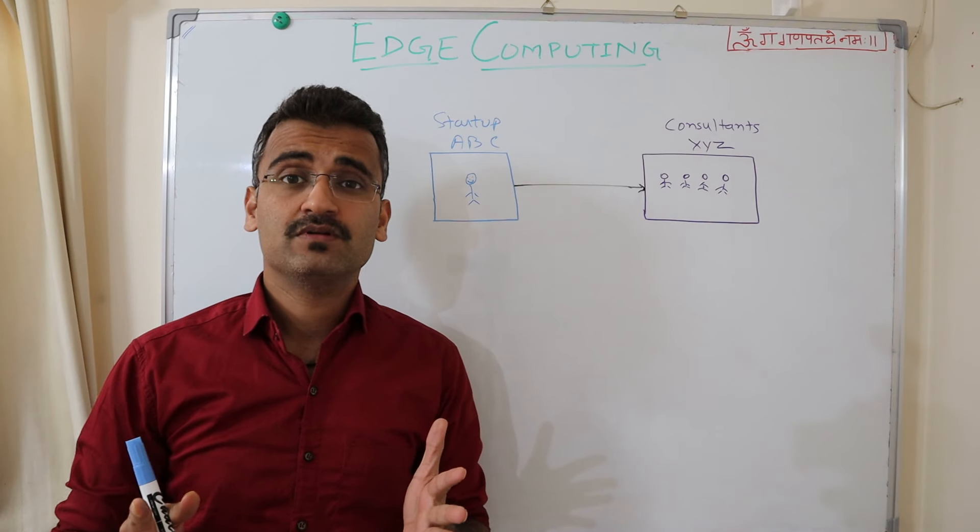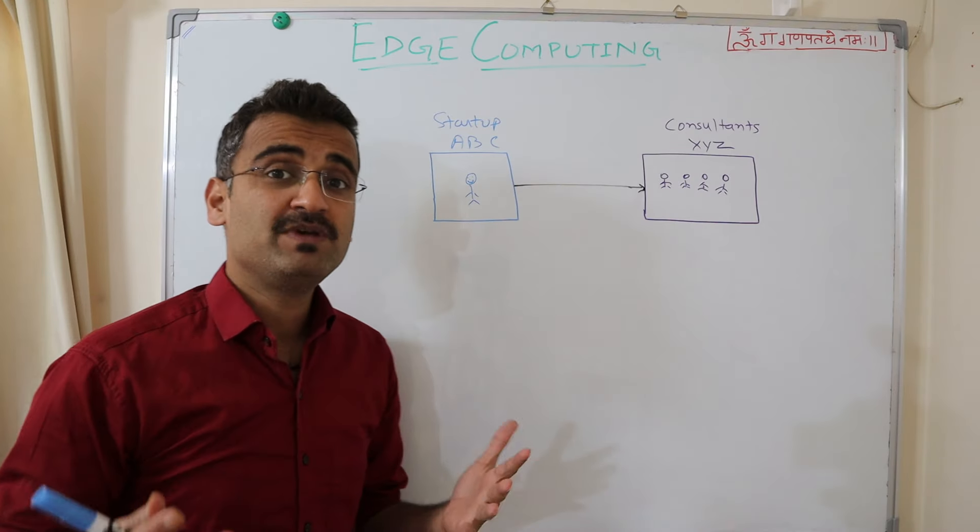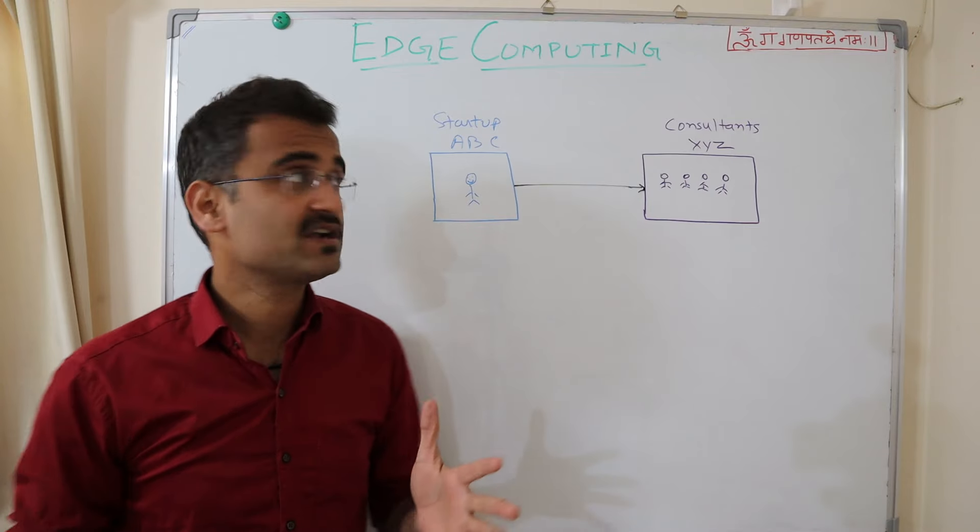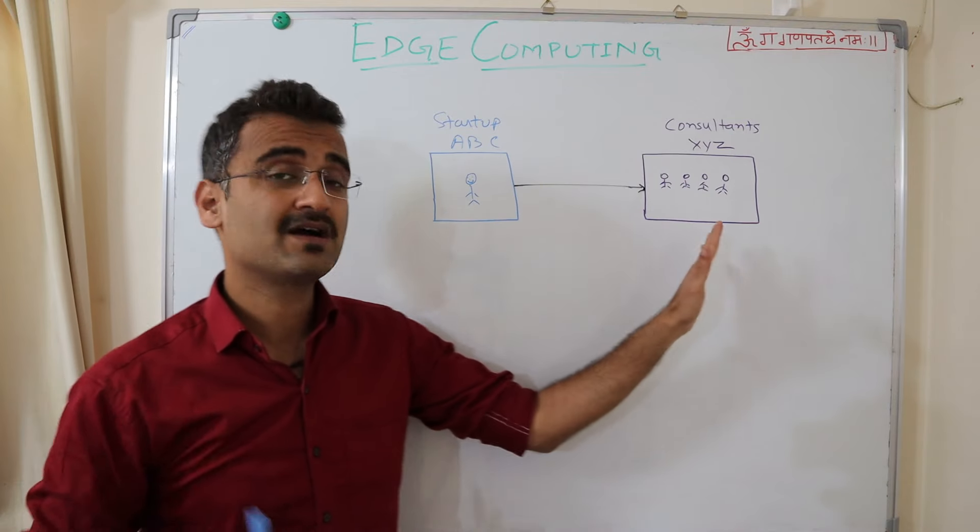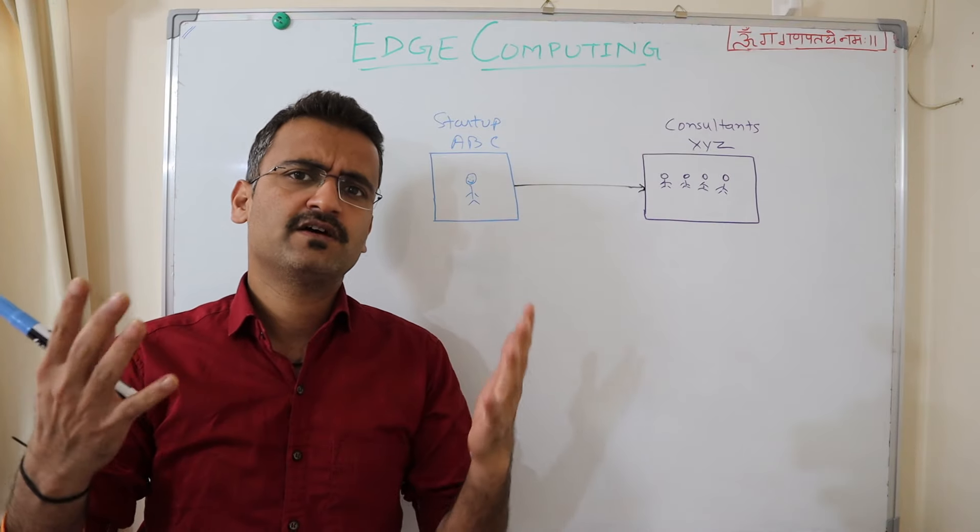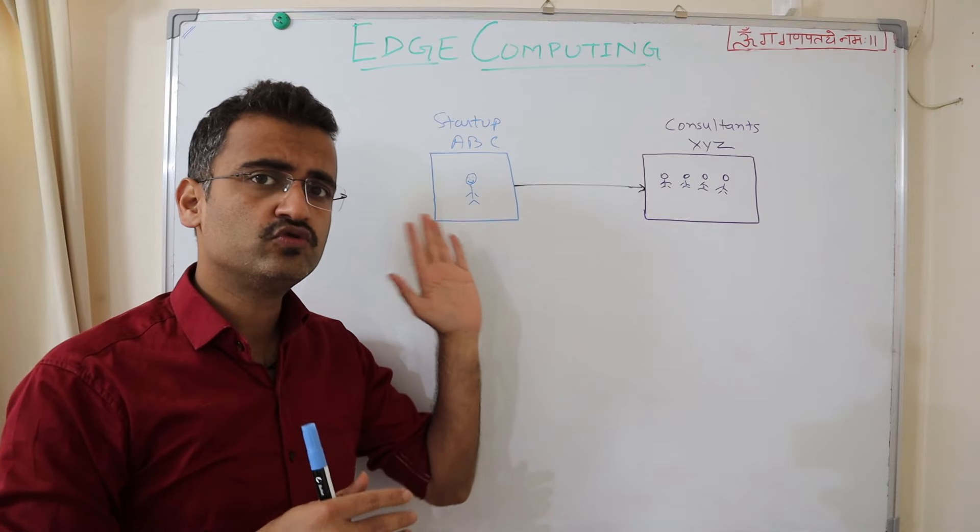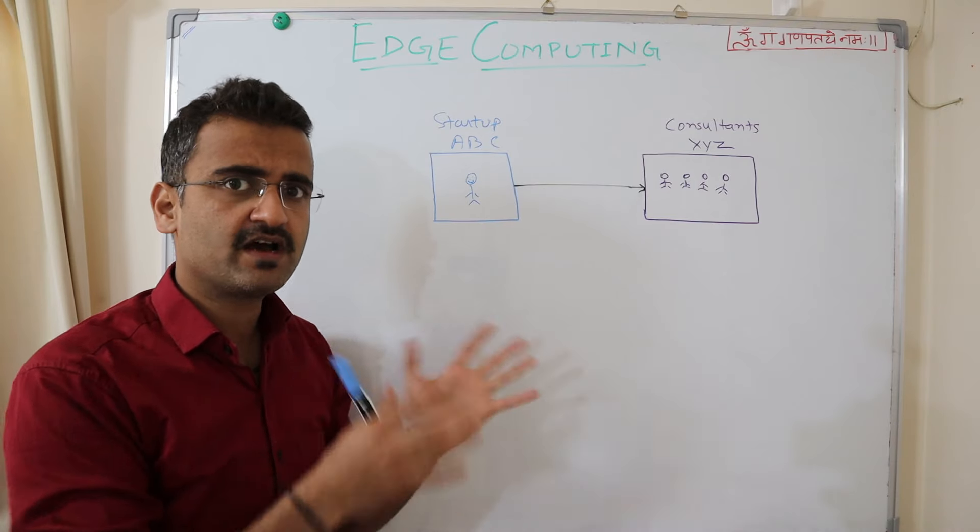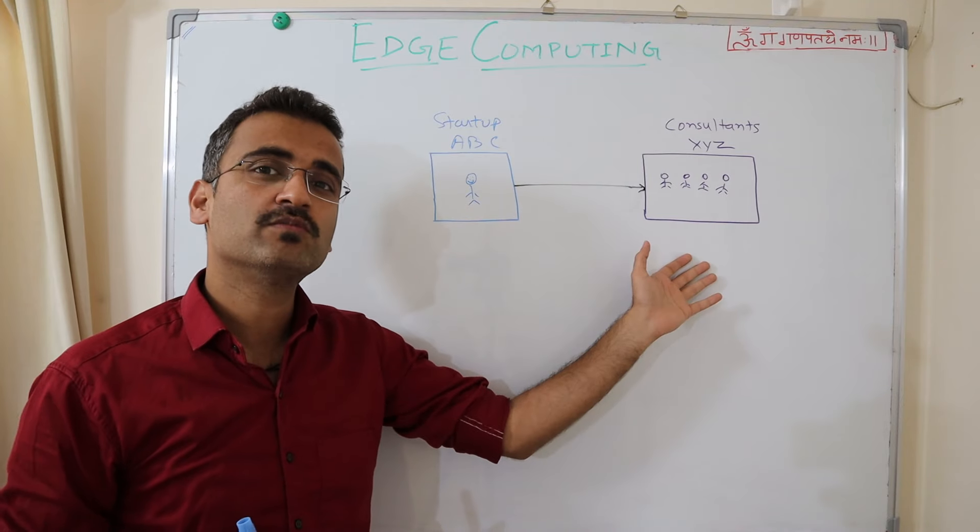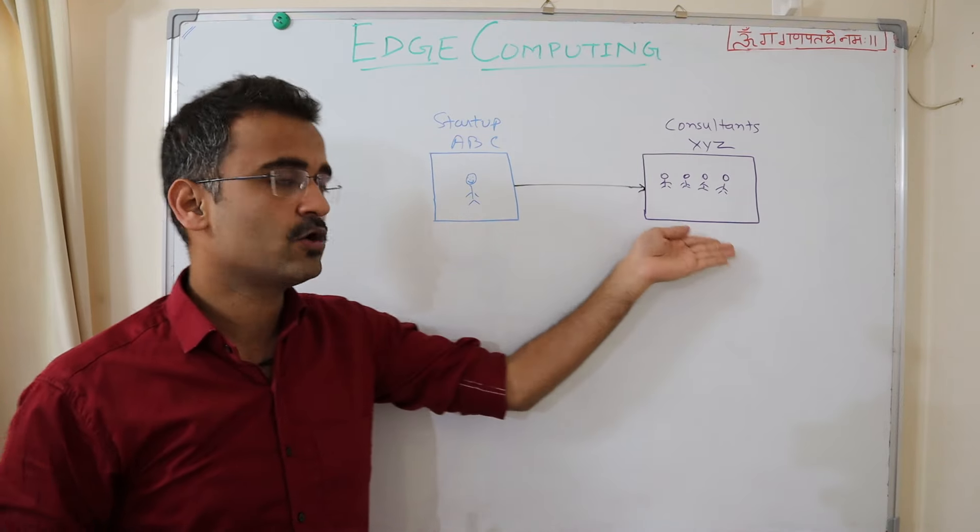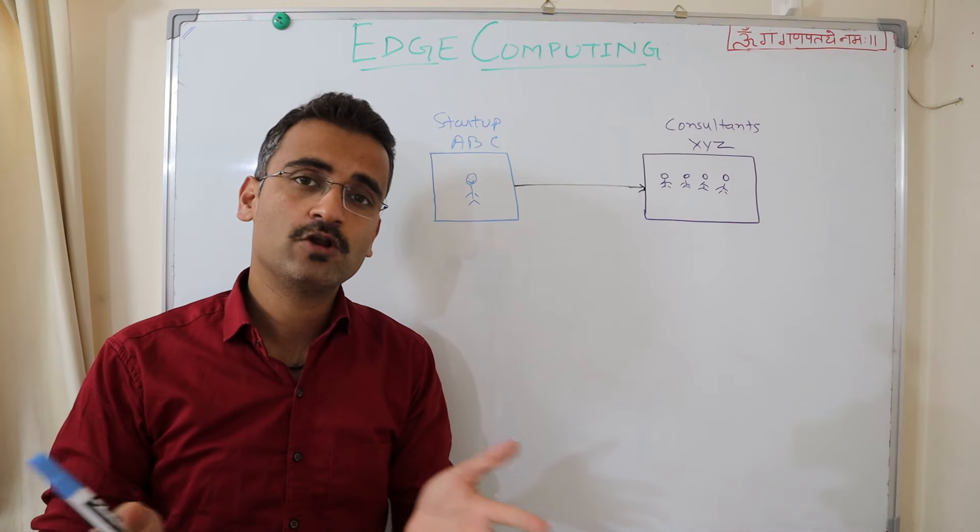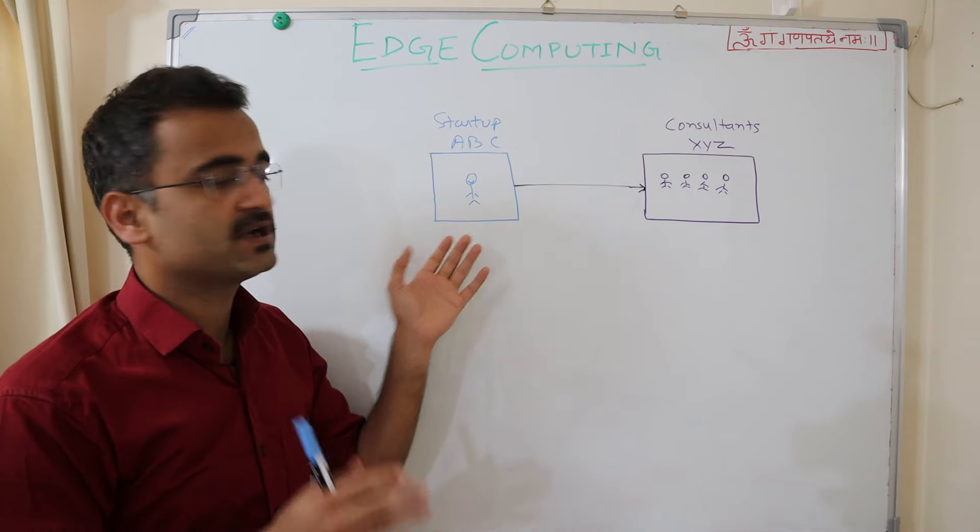So let's take an example. Suppose this is a new startup named ABC and this guy is the owner of this startup. Now to manage the financials of this particular startup, he contacts a consultancy and accountancy firm XYZ. And over the course of next 4-5 years, this guy used to manage all the financial data within its company and then send it over on email or over phone.